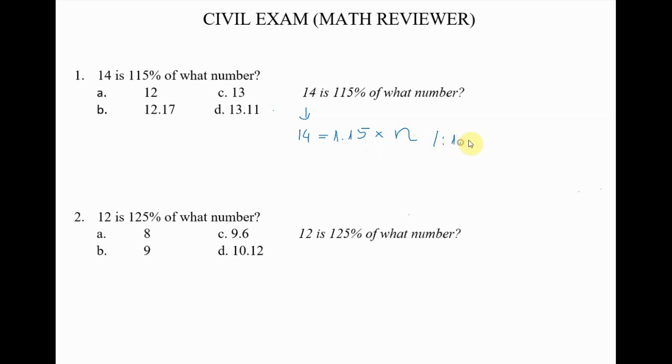If we divide both sides with 1.15 we will have 14 divided by 1.15 is equal to 1.15 and over 1.15. We cancel this and we have...